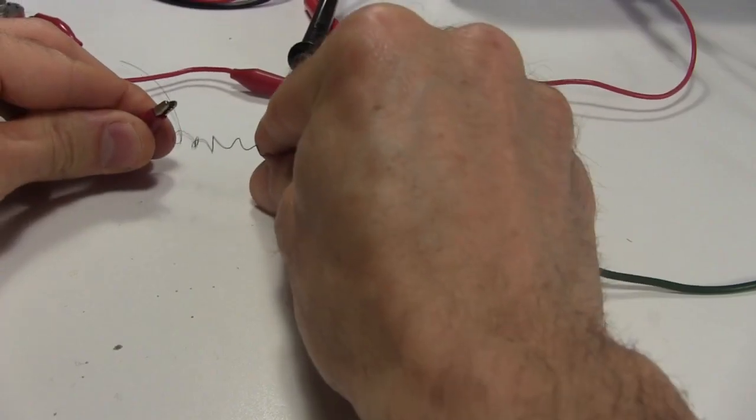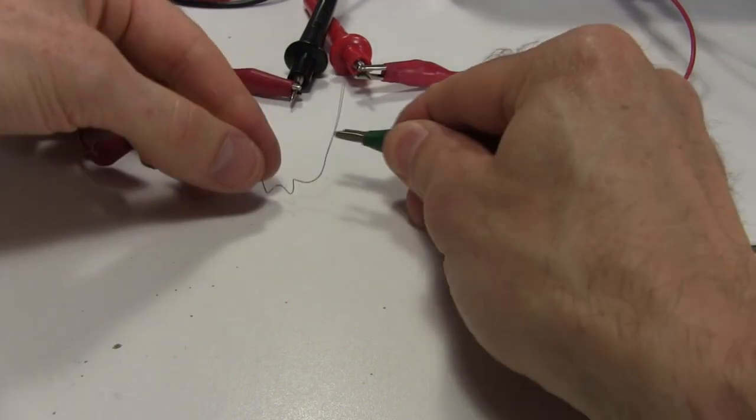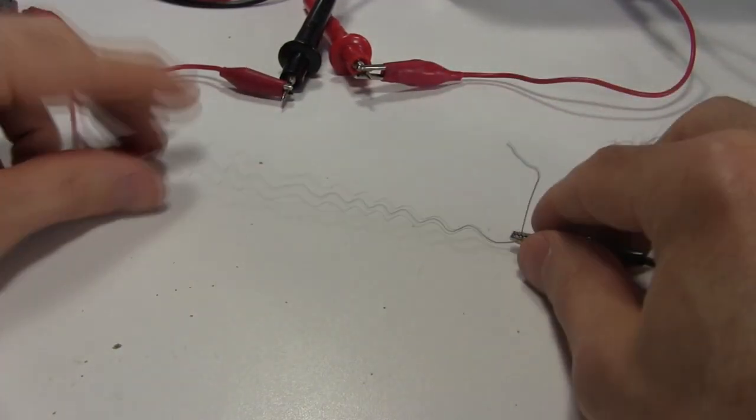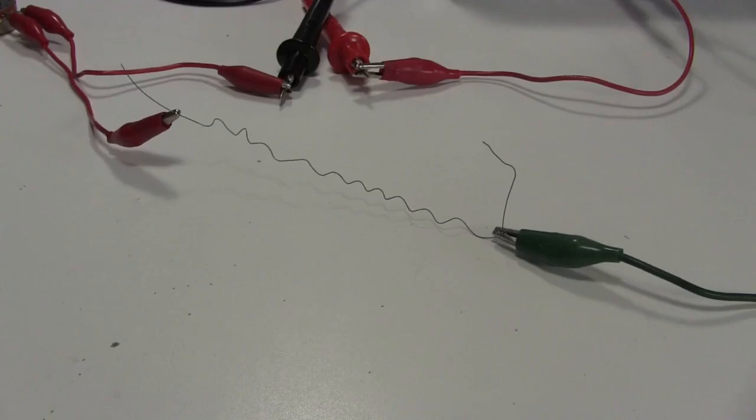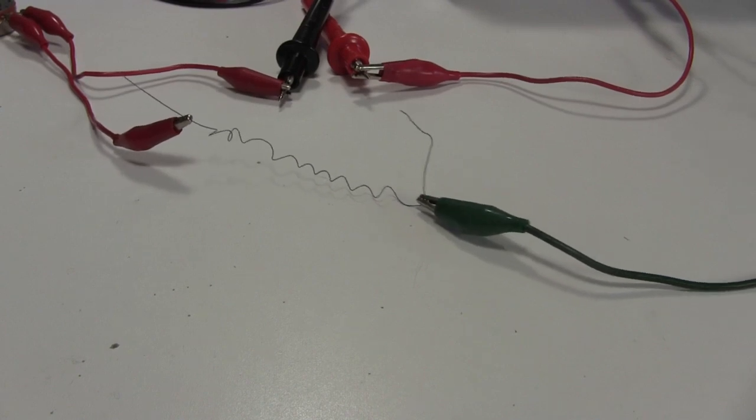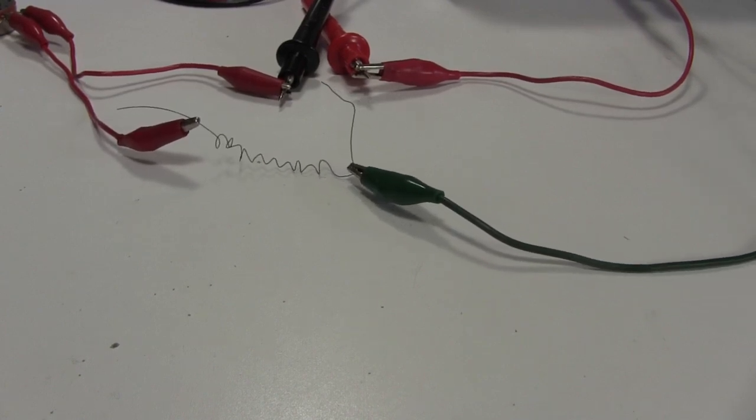I put the spring in the circuit, and stretch it out. I turn on the power supply, and the wire heats up. You can see it's strong enough to pull the alligator clips along the table.